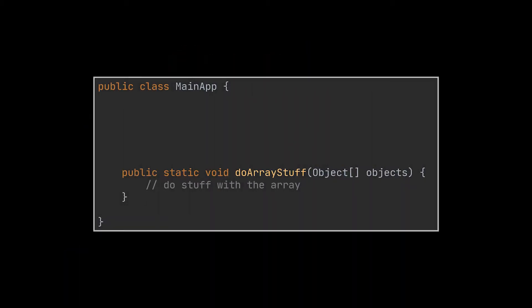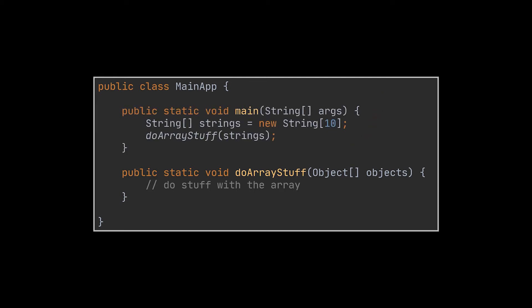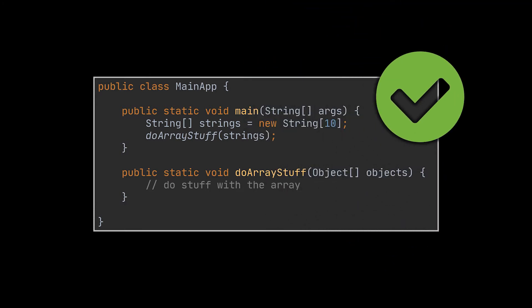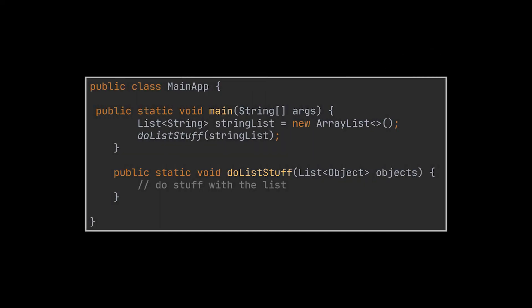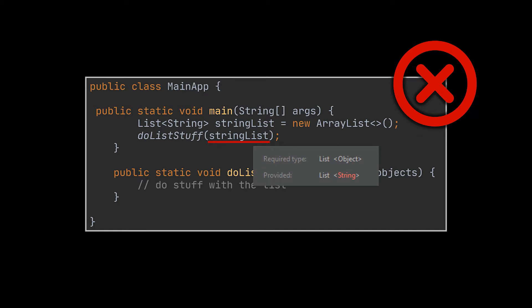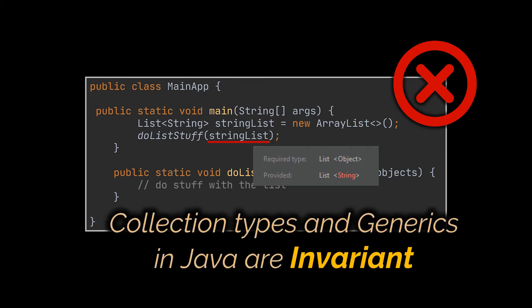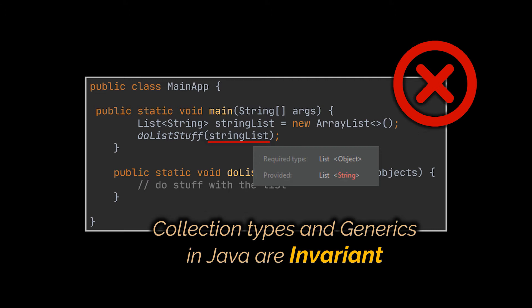Let's start with a simple example. Suppose we have this doStuff method — it takes in an array of objects as a parameter. Now consider an array of strings: we can pass it to this method because an array of String is a subtype of array of Object. But if the method takes a List of objects instead, and we try to pass a List of strings, we can't — because collections and generics in Java are invariant.